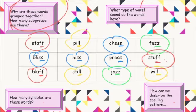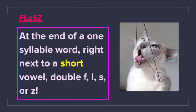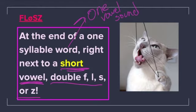Let's see how we can describe this spelling pattern — the short vowel spelling pattern: floss. This is our spelling rule that applies to all those words. At the end of a one syllable word, right next to a short vowel sound — that's where our closed syllables come into play — you double F, L, S, or Z. When you're thinking about your spelling, if that word ends in F, L, S, or Z, you double it, like huff and puff.